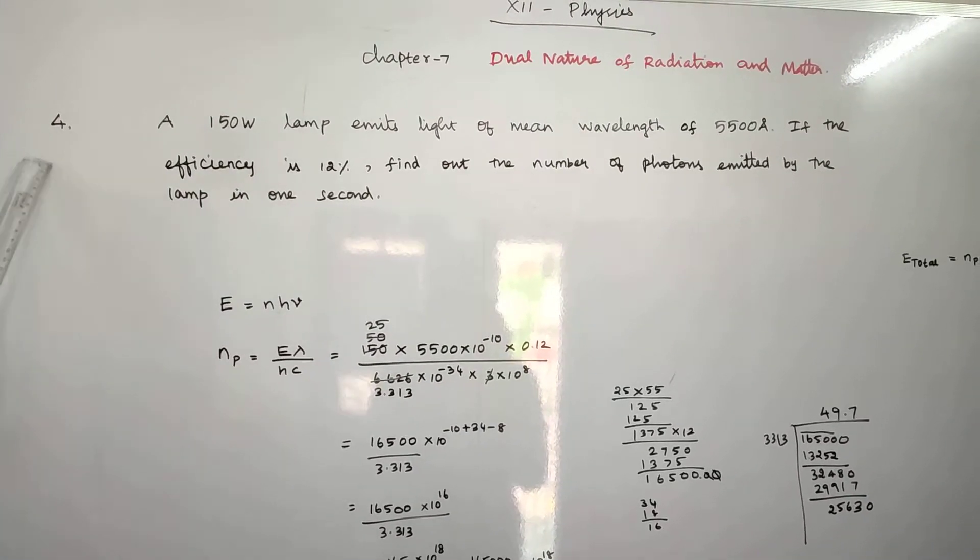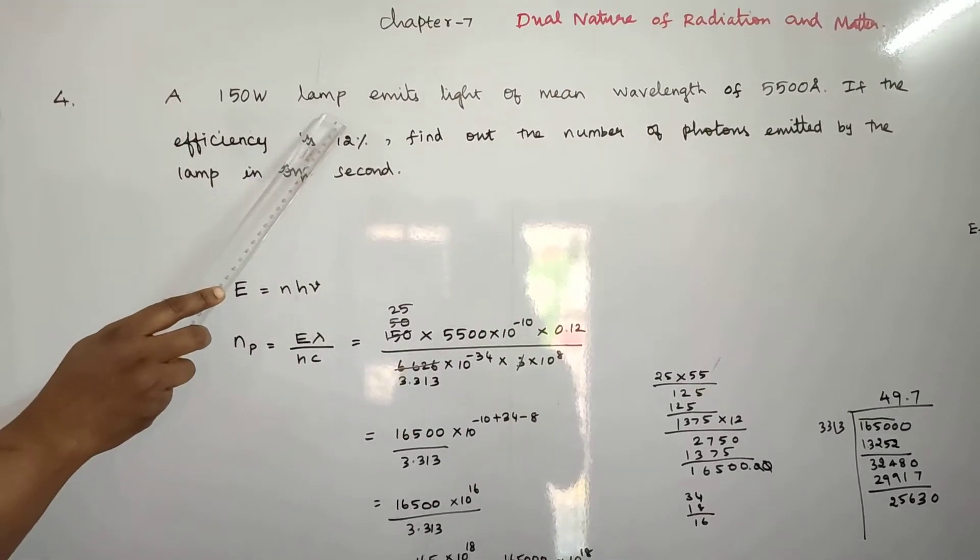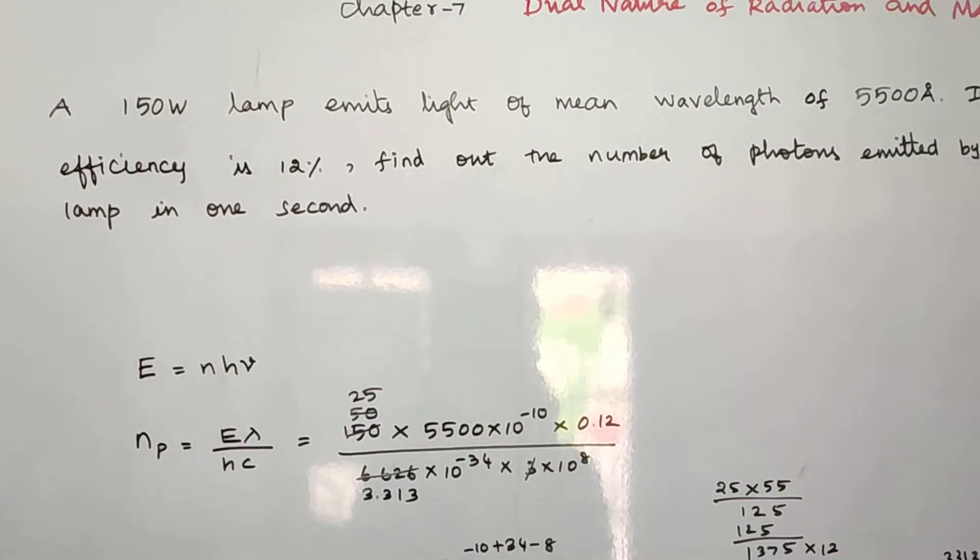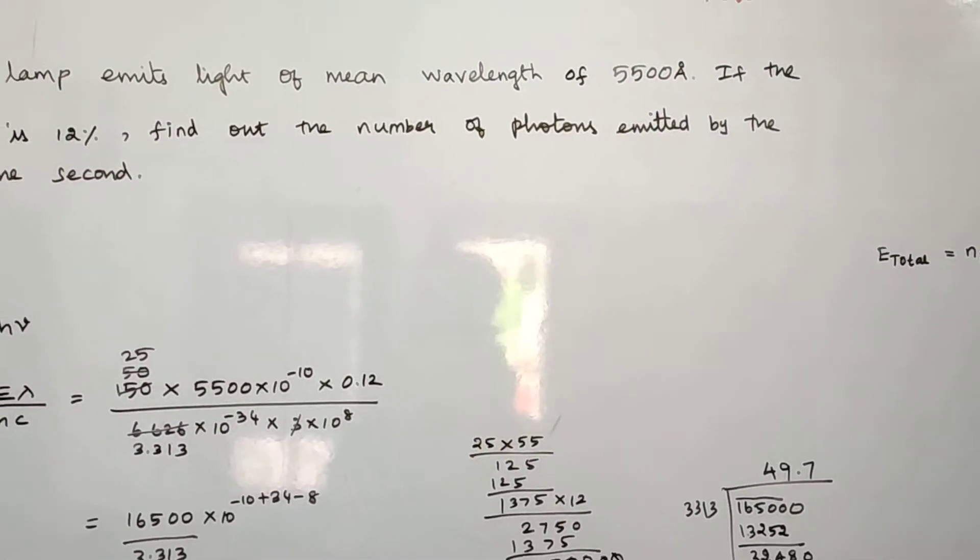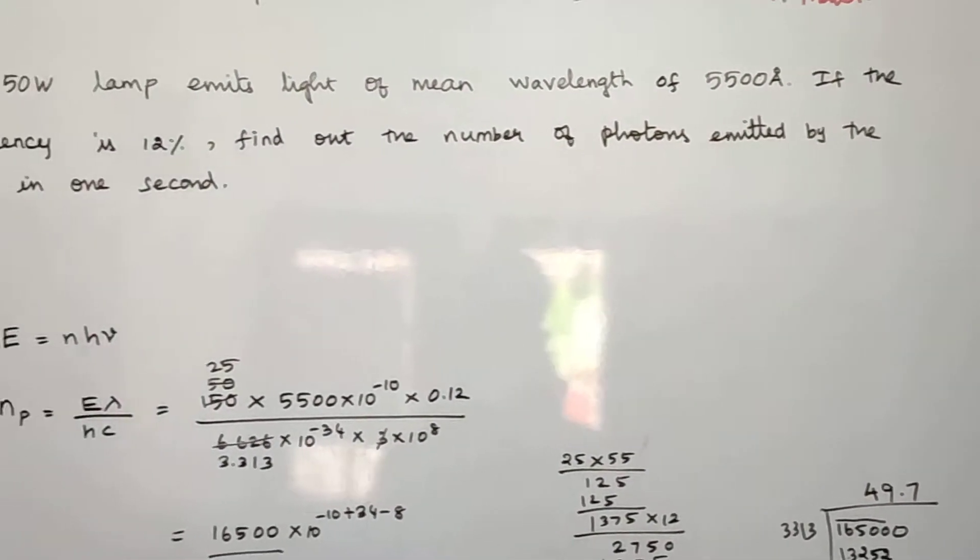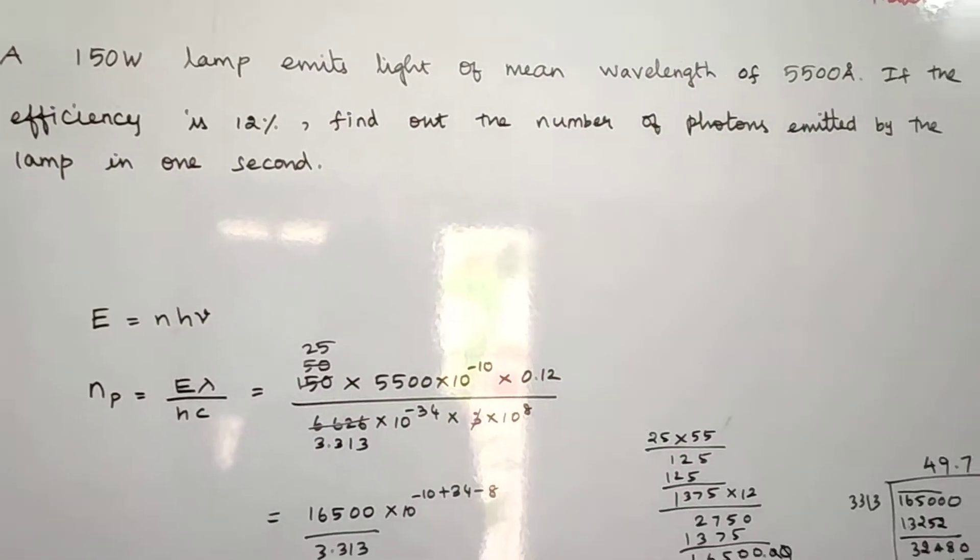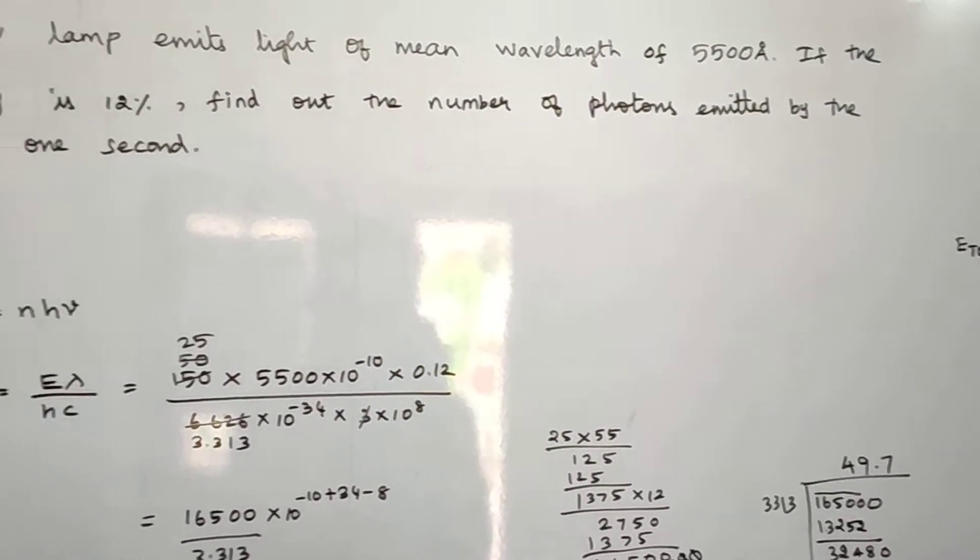Chapter 7, 4th sum. A 150 watt lamp emits light of mean wavelength of 5500 Angstrom. If the efficiency is 12 percent, find out the number of photons emitted by the lamp in 1 second.